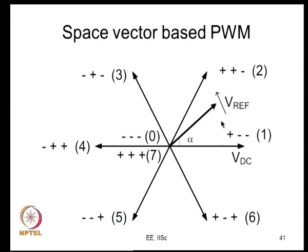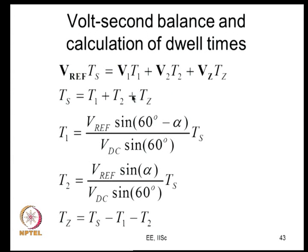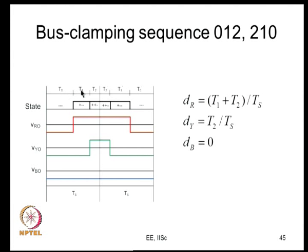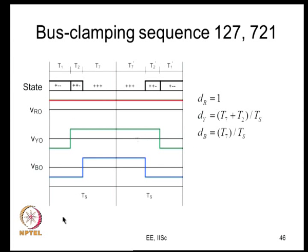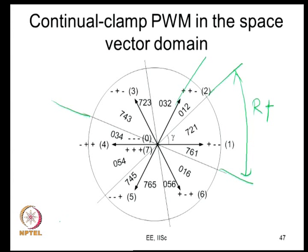Looking at the continual clamp in the space vector domain: you can see the region over which R phase is clamped to the positive bus and the region over which it is clamped to the negative bus. Continual clamping and split clamping can be understood from the space vector perspective, where the zero vector application is redistributed to eliminate switching in one phase for certain angular regions.